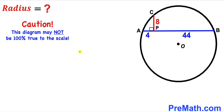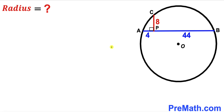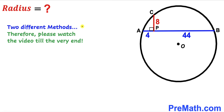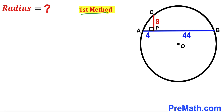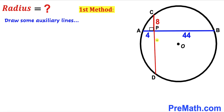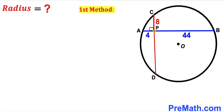Please keep in mind that this figure may not be 100% true to scale. I'm going to share two different approaches, so please watch till the very end. In the first method, we draw some auxiliary lines. I have extended segment CP all the way to point D, giving us chord CD. I'll label segment PD as x, and our task is to find the value of x.